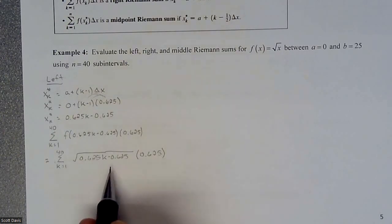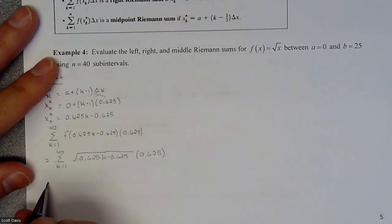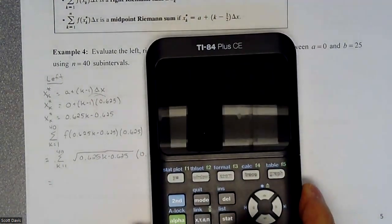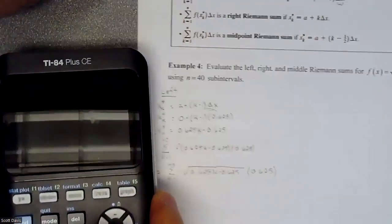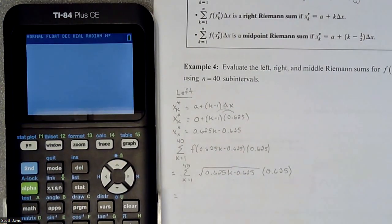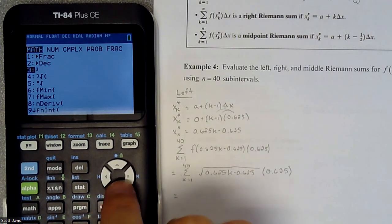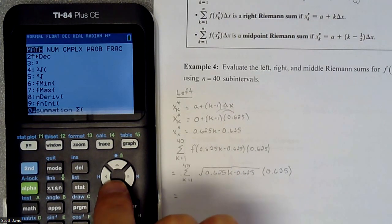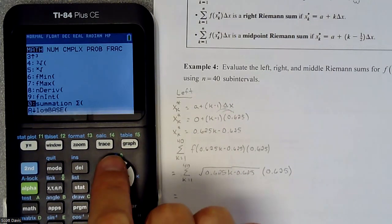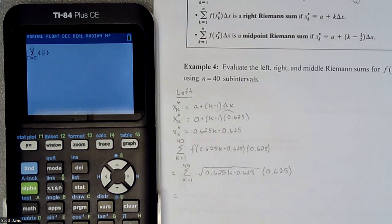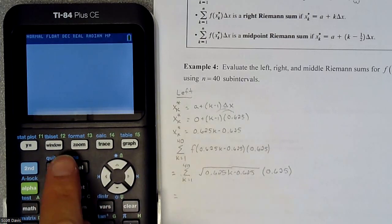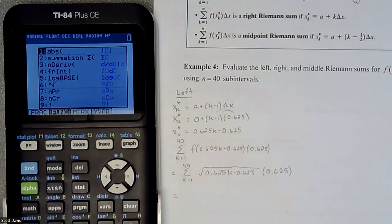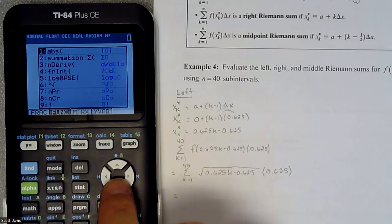That is what we're going to plug into the calculator. In the calculator, these options are in the math window. If you scroll down you'll find the summation. Another way is the F2 shortcut, which gives quick access to absolute values, summations, derivatives, integrals, logs, and cube roots. We'll use the summation option.